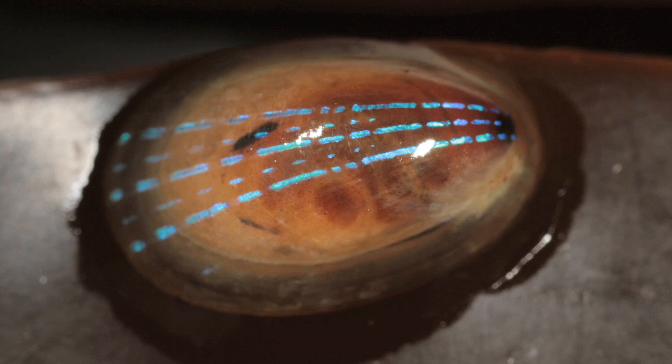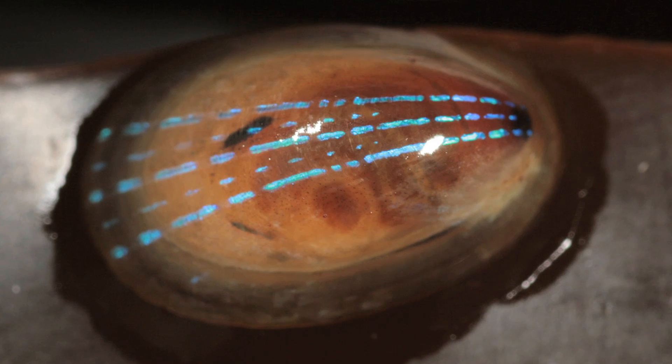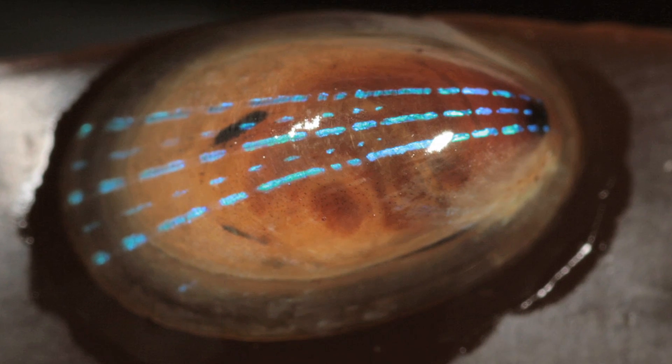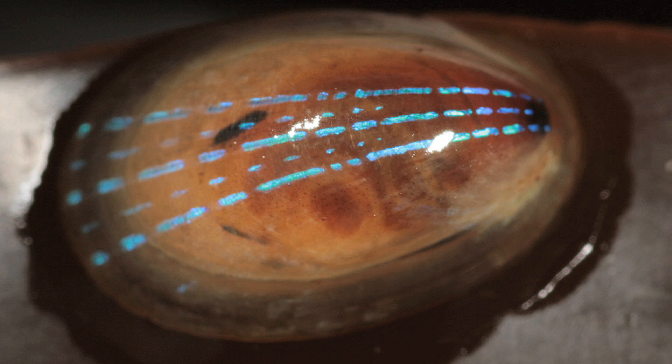This is the blue rayed limpet. It is a tiny mollusk that lives in kelp beds along the coast of Norway, Iceland, the United Kingdom, Portugal, and the Canary Islands.